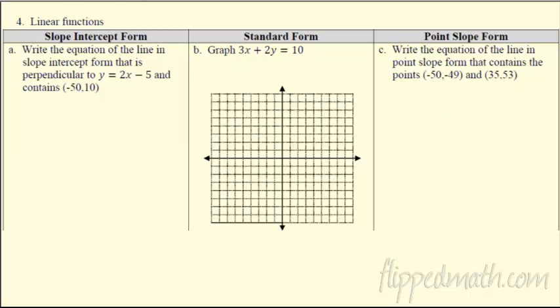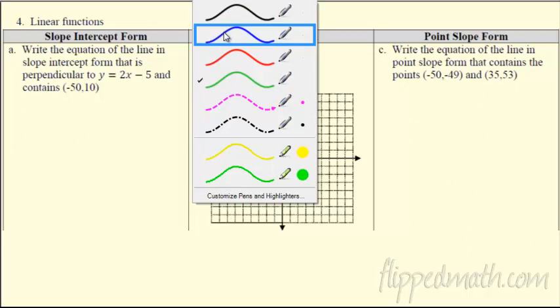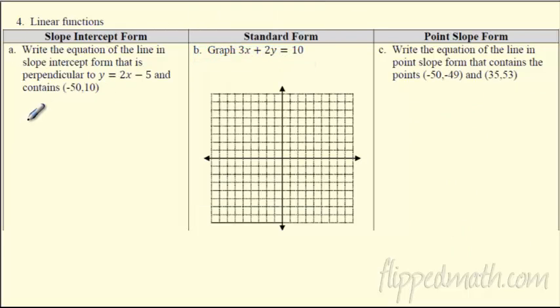Then we did this linear function. So remember, we were doing linear functions because we were looking at a couple different ways to write. Slope intercept is mx plus b. And again, I just kind of did one earlier. But if it's perpendicular to this line, remember, perpendicular means you want the negative reciprocal. You want to take it, flip it, and change the sign. So you're looking for negative 2. And it goes through that point in slope intercept form.